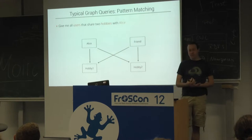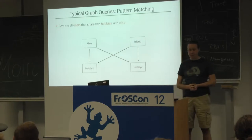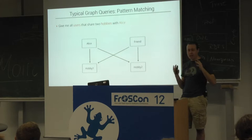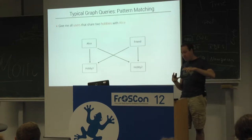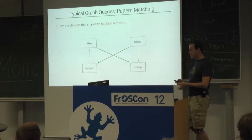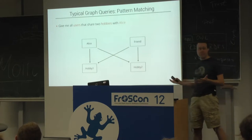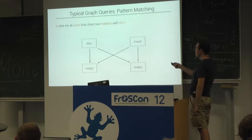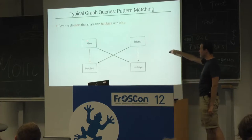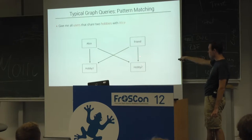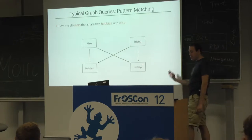But the most commonly used query in a graph database is so-called pattern matching. Pattern matching is that you describe a part of your graph — a subgraph — with some unknown components, and you match this pattern onto your entire graph database and find all subgraphs that can fit those unknown components such that the pattern is matched. For example, give me all the users that share two hobbies with Alice.